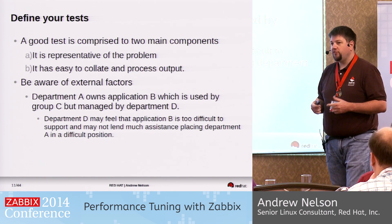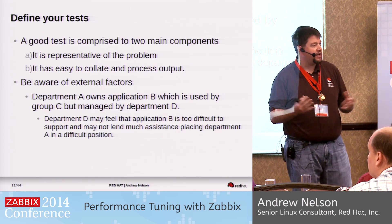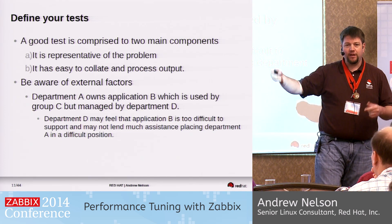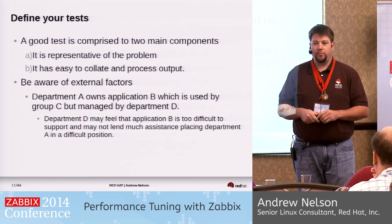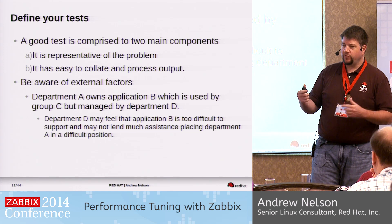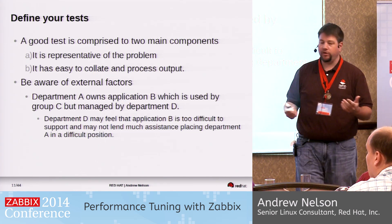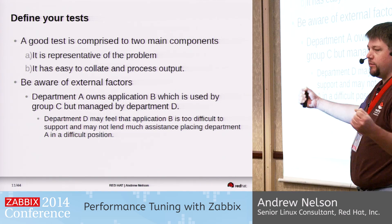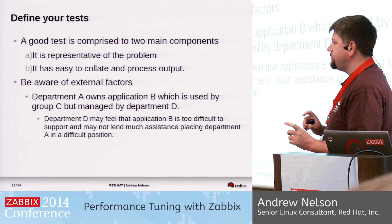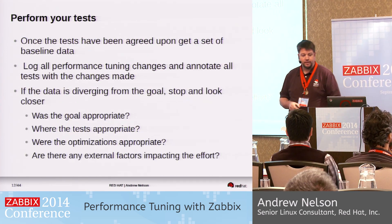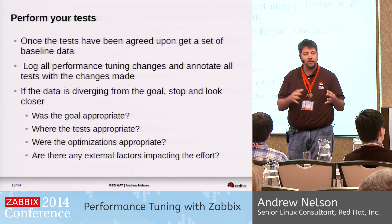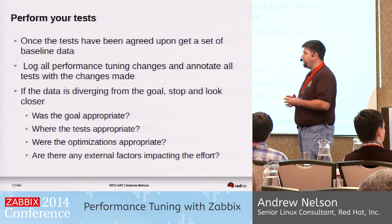Politics and external forces play a role. You may have an application owned by one department administered by another, where performance problems actually stem from a third department responsible for networking, storage, or a hypervisor overloaded with other guests. Your pain points may not be where you expect them. Make sure you have an agreed-upon set of tests, and ensure all stakeholders agree that your tests are representative of the problem.